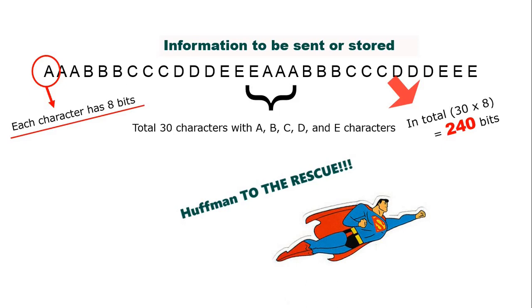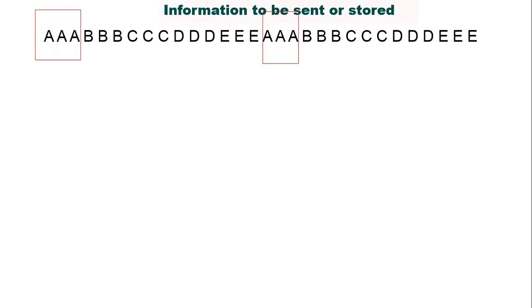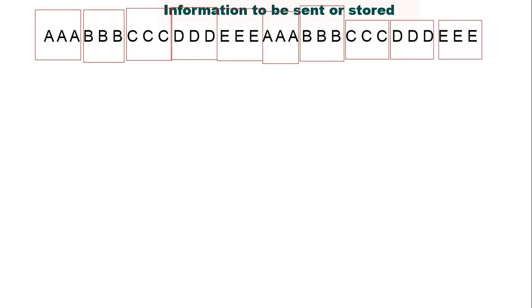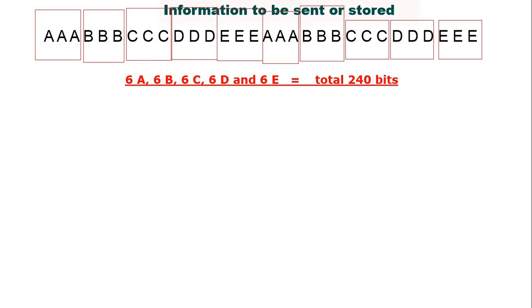The message on the screen has 6 A characters, 6 B characters, 6 C characters, 6 D characters, and 6 E characters — so 30 total, which gives us 240 bits. Now what we want to do is make a table for this, and we will map these characters — that is, we will use these characters as input in our table.